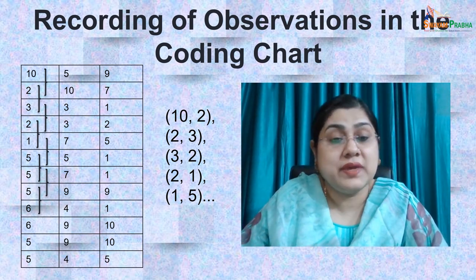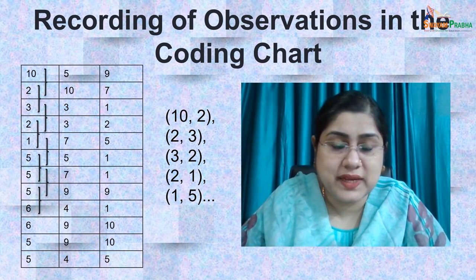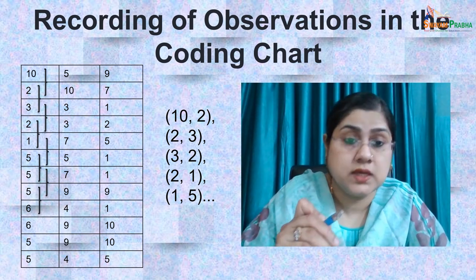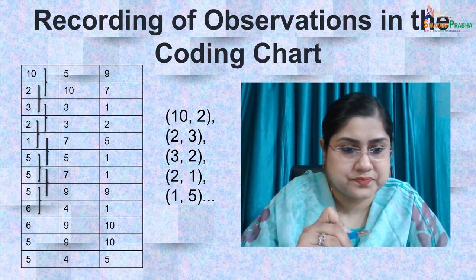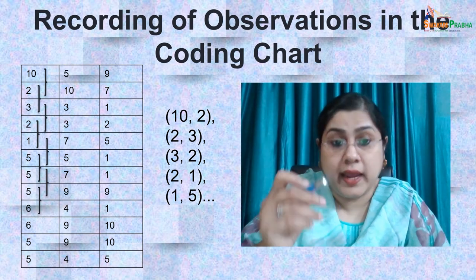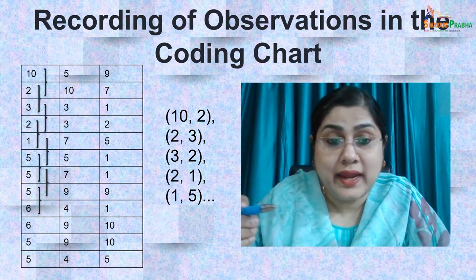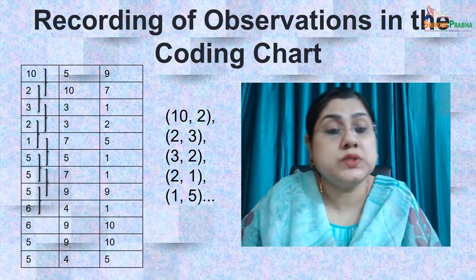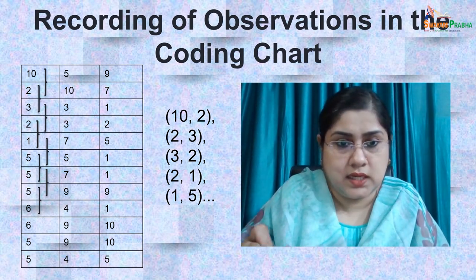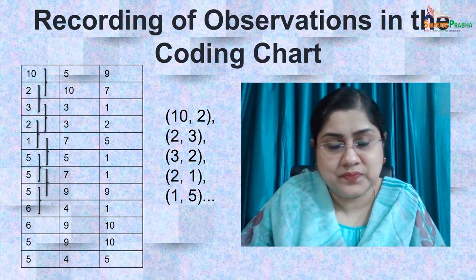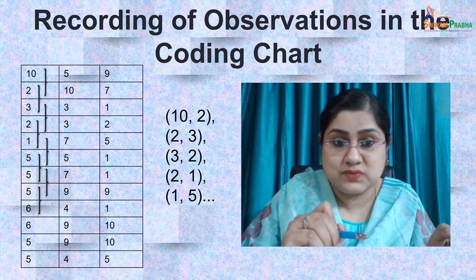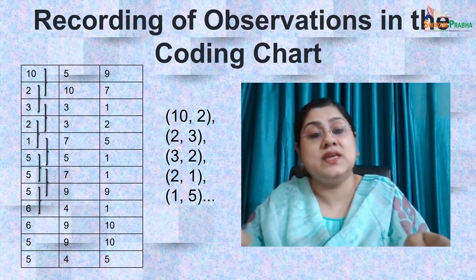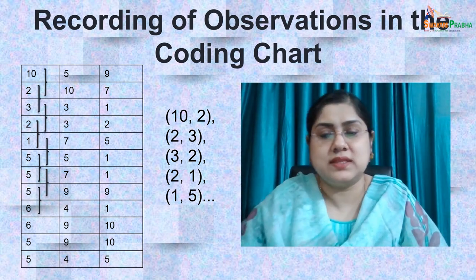After recording, pairs are made from the sequence. The first two readings — say 10 and 2 — are paired. Then the second number (2) is repeated as the first number of the next pair, making 2 and 3. The next pair is 3 and 2, then 2 and 1, and so on. In this way the second number of each pair becomes the first number of the next pair, and the entire sequence of overlapping pairs is constructed.